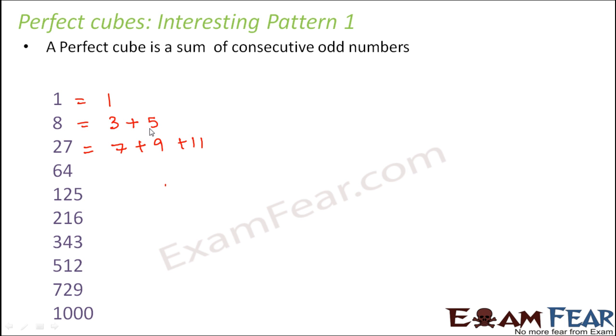Now another interesting pattern is that if you look from the top, you see 1, the next odd number is 3, next is 5, next is 7, 9, 11. So basically it's an order. When you look at the perfect cubes in increasing order, you see that the consecutive odd numbers of which it is a sum, those odd numbers are also in order.